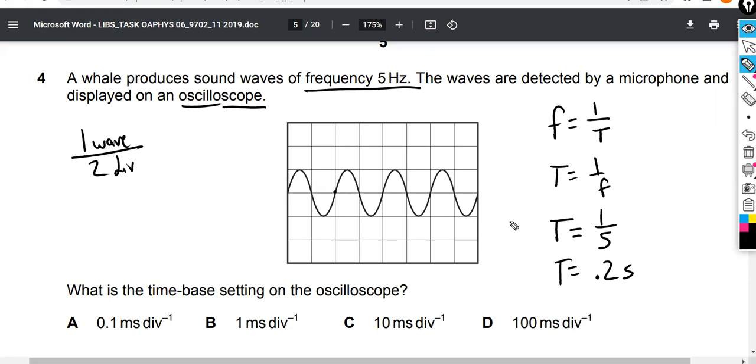If we use the definition of period, we've got 0.2 seconds per wave. We're trying to figure out how much time each one of these divisions represents. The time-based setting is adjustable on an oscilloscope so you can measure a range of different frequencies, whether you're measuring something with a very low frequency or a very high frequency.